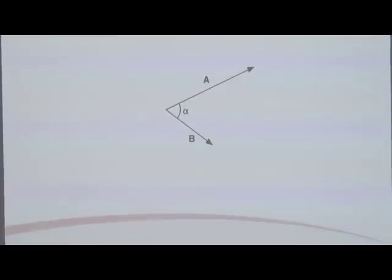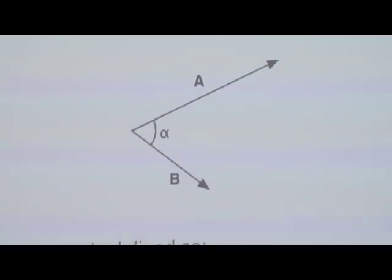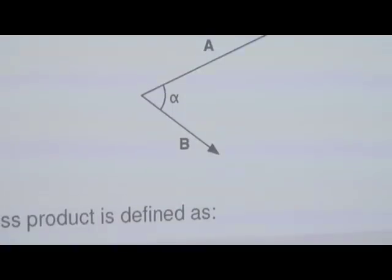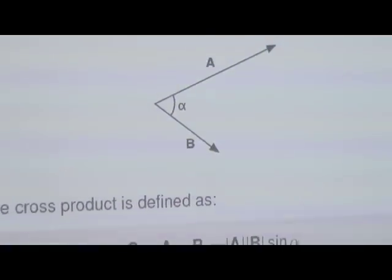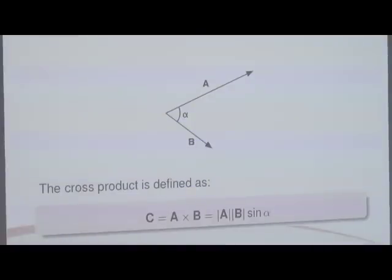For the geometrical method: here are two vectors A and B. To work out A cross B, the rule is that it's the magnitude of A times the magnitude of B times sine alpha — similar to the dot product except we've got the sine of the angle rather than the cosine. So if the two vectors are on top of each other, the angle is zero and sine of zero is zero, so the cross product is zero if those vectors lie on top of each other.